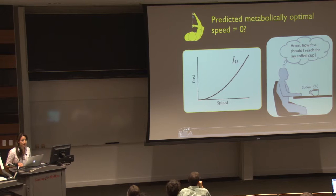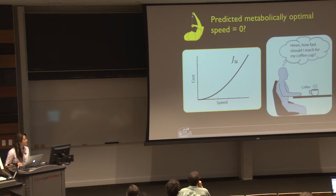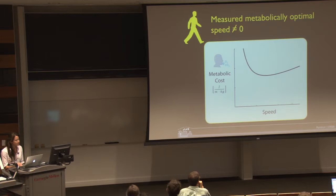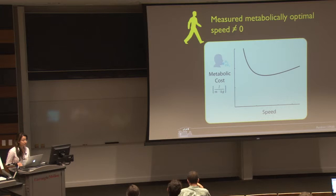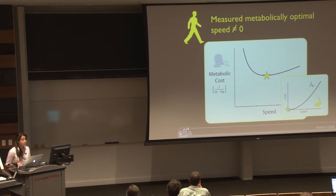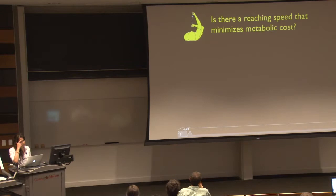In human locomotion, it's generally accepted that metabolic cost is a major determinant of the choice to walk at a given speed, largely because actual metabolic cost has been measured and there is a metabolically optimal walking speed. This is in direct contrast to the predictions of the arm reaching models, which predict a metabolically optimal speed of zero but don't have metabolic data to back up that prediction. So we thought: let's measure metabolic cost during reaching movements and determine whether there is a reaching speed that minimizes metabolic cost.